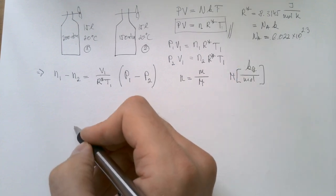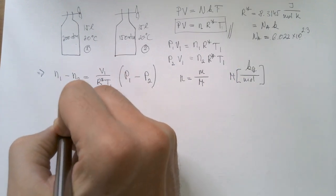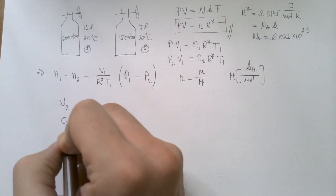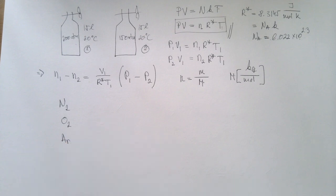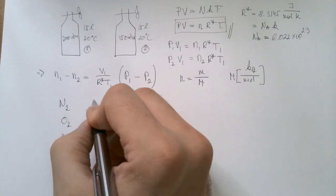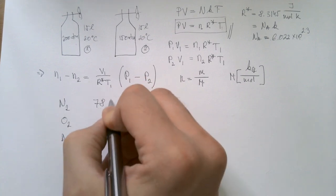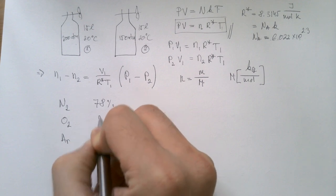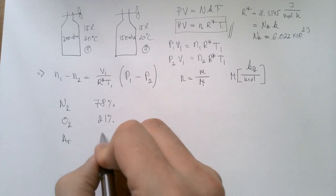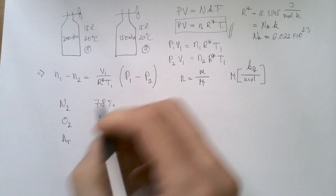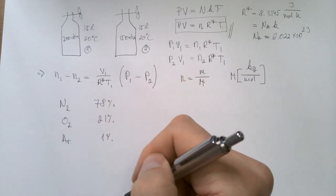Now, in air, we have nitrogen, we have oxygen, and we have argon. And they are in percentages of 78%, 21%, and less than 1%, but for the purpose of this video, I'll just say 1%. And this is something we discussed in my previous video.